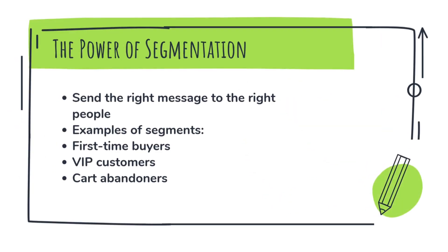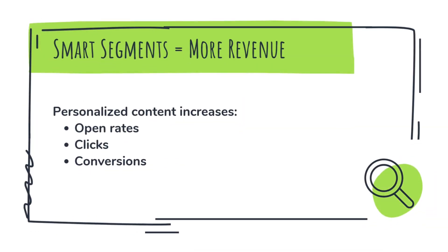Segmentation is where Klaviyo begins to show its true potential. Instead of blasting the same email to everyone, you can target specific groups based on real behaviors and attributes. For example, you can create segments like customers who've bought in the last 30 days, people who abandoned their carts but didn't complete a purchase, high-spending VIPs, or subscribers who haven't opened your last five emails. This lets you send personalized emails — a thank you to new buyers, a discount to cart abandoners, or a re-engagement email to inactive subscribers. The more relevant your messaging, the higher your open rates, click rates, and sales.